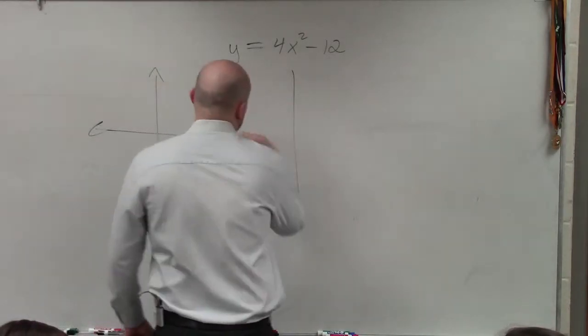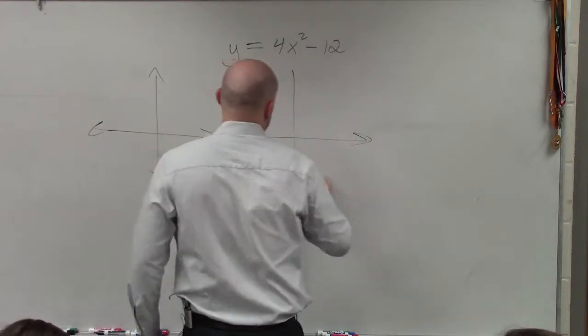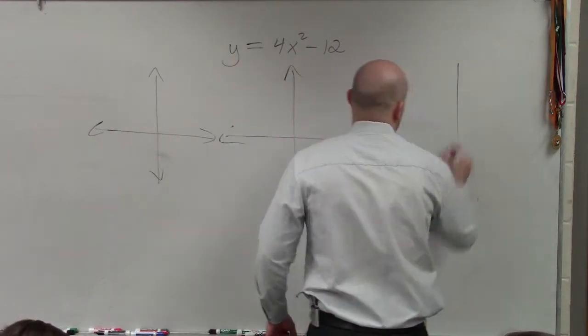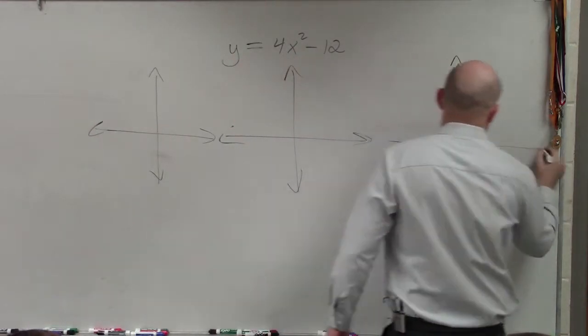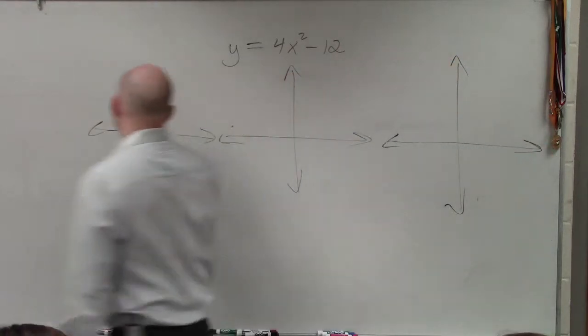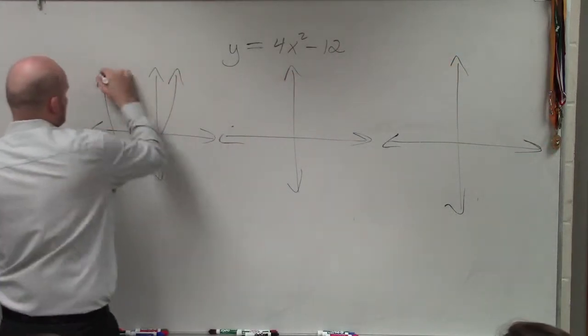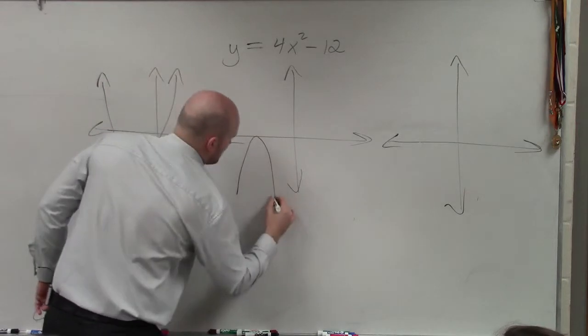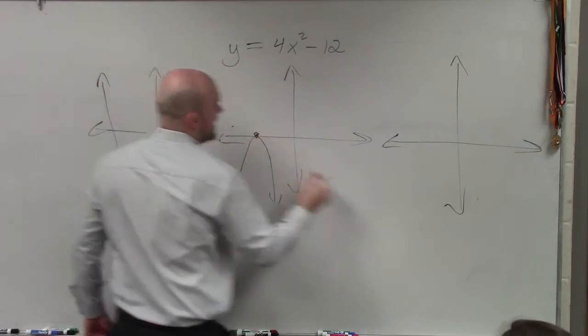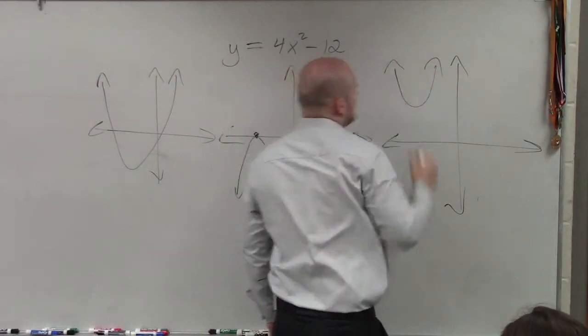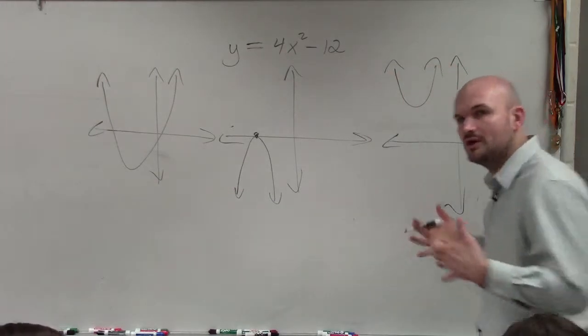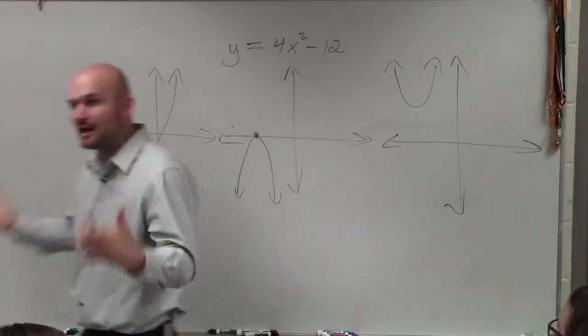There are basically three types of parabolas that we could have. We could have a parabola that looked like this, one that looked like this, or one that looked like this. So through your investigation of graphing parabolas,